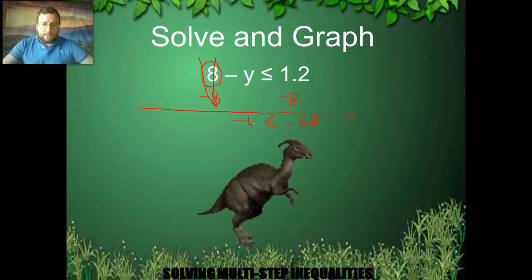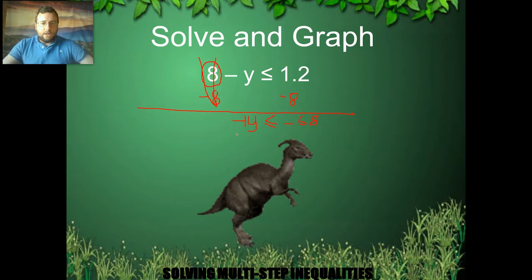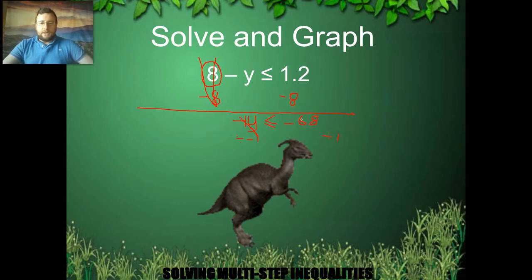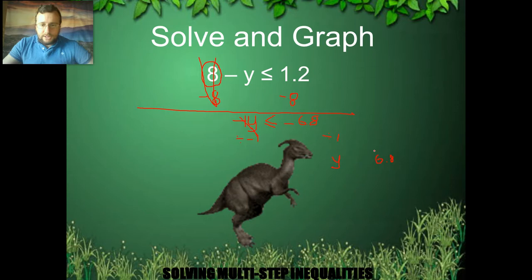Now I have negative y. You may be tempted to think you're done, but you don't want negative y — you want y. Remember, it's as if there's a negative 1 in front. So I divide both sides by negative 1 to get rid of it. The negative 1s cancel out on the left. Negative divided by negative is positive, and 6.8 divided by 1 is just 6.8. But because I divided by a negative, I must change the orientation of the sign from smaller than or equal to, to bigger than or equal to. So I'm looking for values bigger than or equal to 6.8.